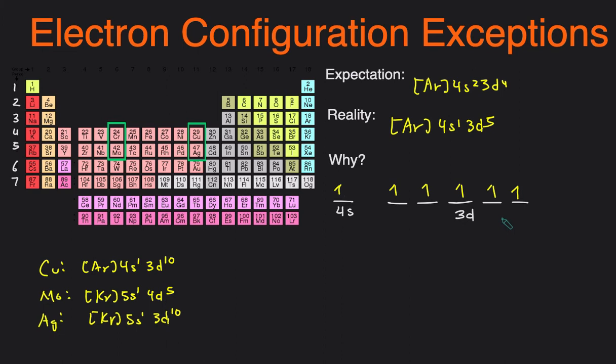And those are the four most common exceptions to electron configuration. There are a couple more, but you'll probably only see these four in high school chemistry or general chemistry class in college.